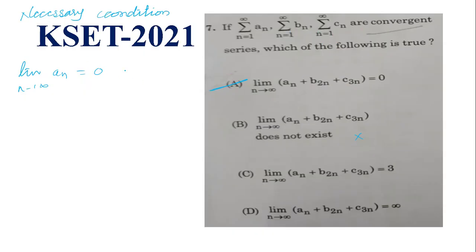By using the necessary condition — limit as n tends to infinity of a_n equals 0 — each term a_n, b_n, and c_n also tends to 0. Therefore their linear combinations also tend to 0. However, from this condition alone, we cannot say in all cases whether a series is divergent or convergent — it is a necessary but not sufficient condition.